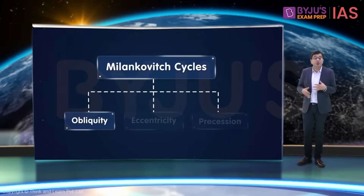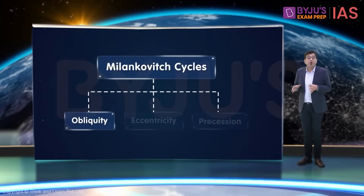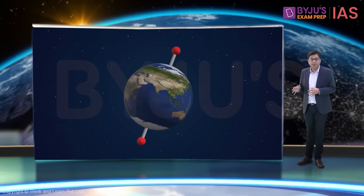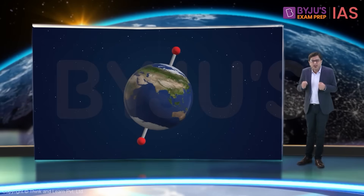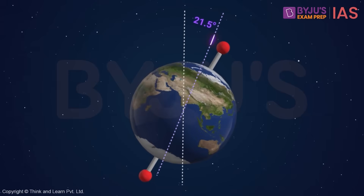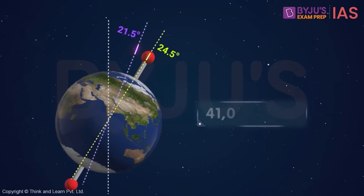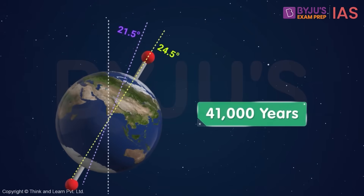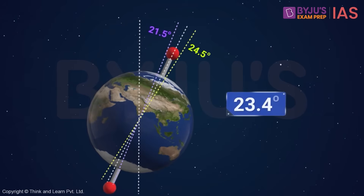Firstly, we have obliquity, or the earth's axial tilt. The earth's axial tilt varies between 21.5 and 24.5 degrees over the course of about 41,000 years. Currently, it is around 23.4 degrees to be precise, or about halfway between its extremes.